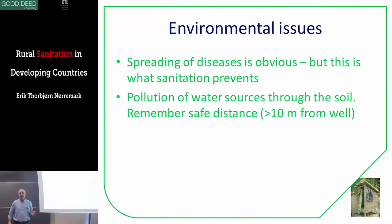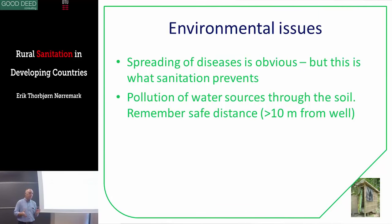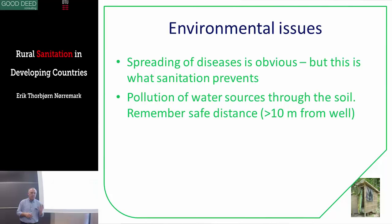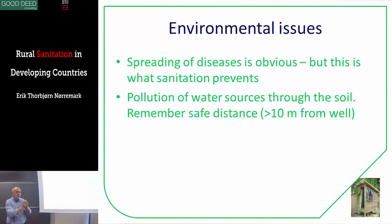We need to stop spreading diseases — that's part of the job of sanitation. There is a risk of pollution of water sources through the soil if the water source — the well or river — is too close to the latrine. Remember a minimum safe distance of 10 meters. In some instances it should be 50 or 100 meters depending on the soil, but in most cases 10 meters is okay because bacteria cannot move very far — they get stuck in the soil.